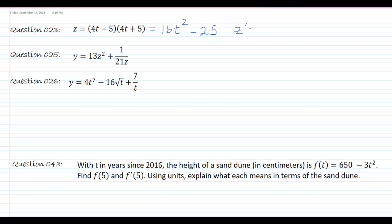And thus the derivative — bring the 2 down times 16 — and then of course the 25 is a constant, so that goes away.